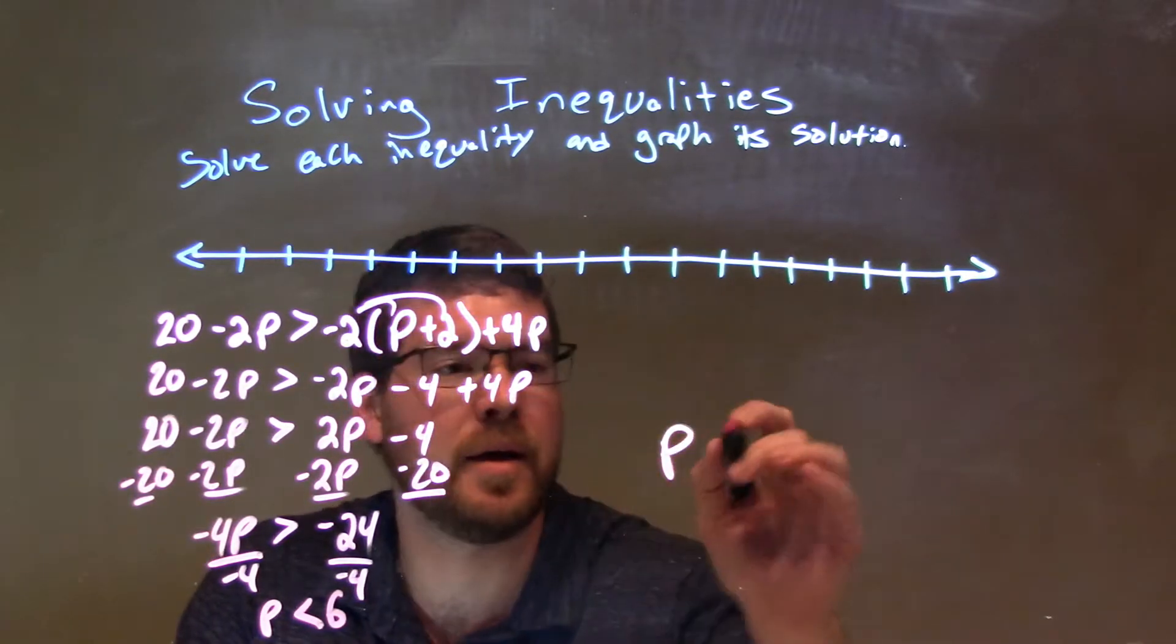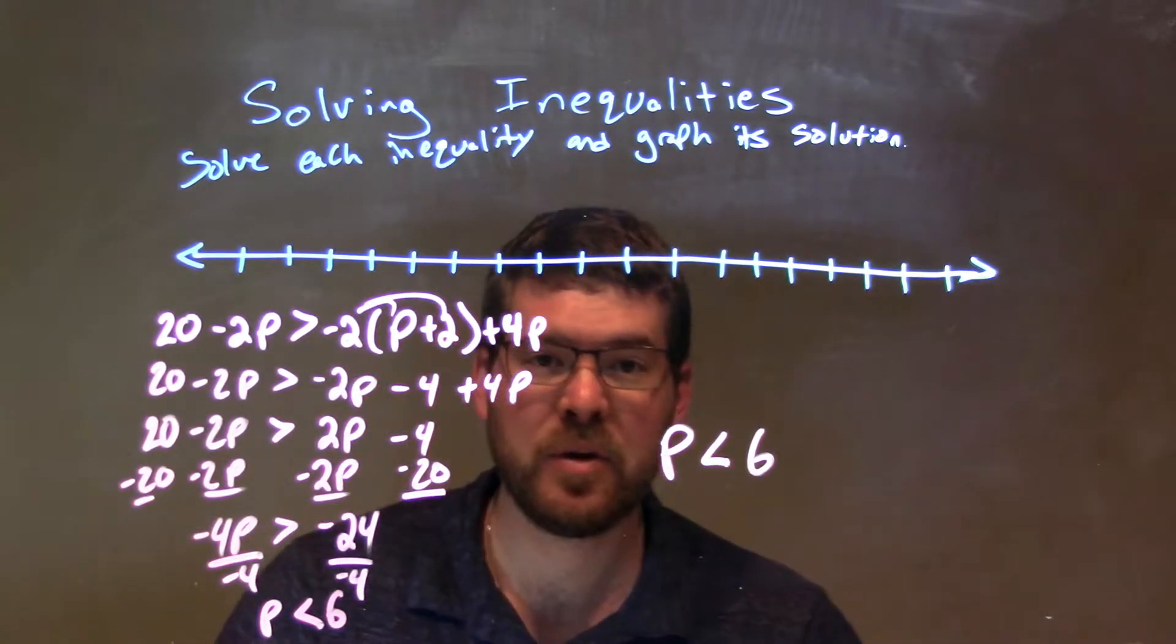And negative 24 divided by negative 4 is a positive 6. So, I'm going to rewrite it here with p is less than 6 right there, and that's going to be our final answer.